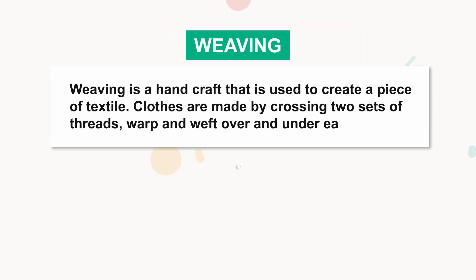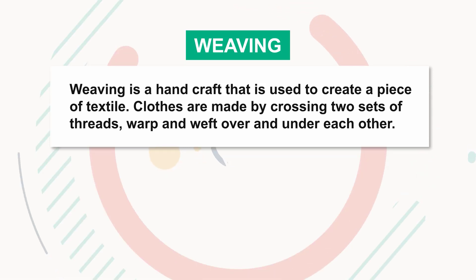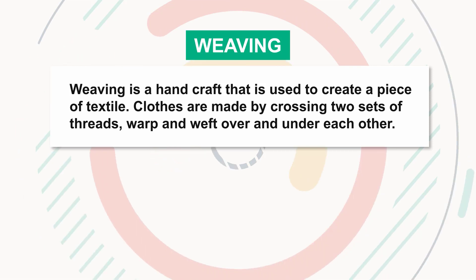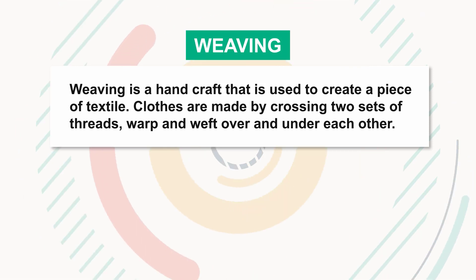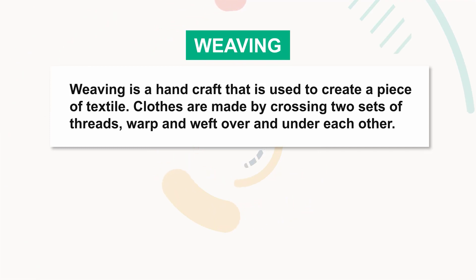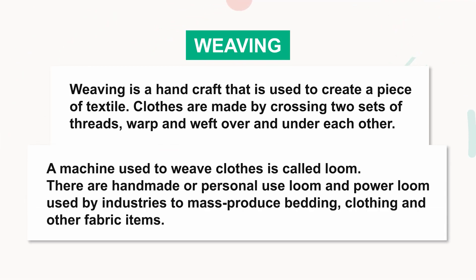Weaving is a handcraft that is used to create a piece of textile. Cloth is made by crossing two sets of threads, warp and weft, over and under each other. A machine used to weave cloth is called a loom.